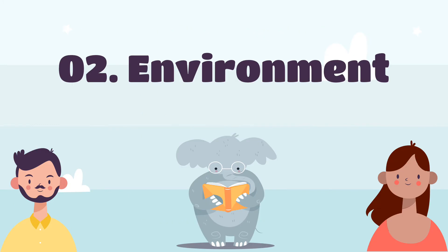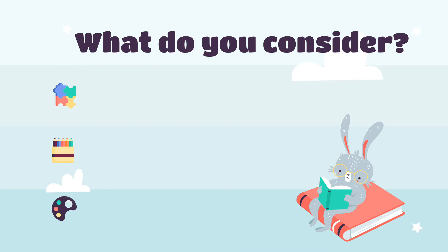So now I need to think about my environment. There are entire units on this, but some things to think about are these three main things. First, think about how much space you have in your centre. There are lots of things that say you need all these different learning areas, but think about what space you actually have. If you are in a centre blessed with space, you can set up large areas or multiple smaller areas. You also have to think about your lines of sight — you don't want to create lots of hidden areas because then you don't know what's going on in them.